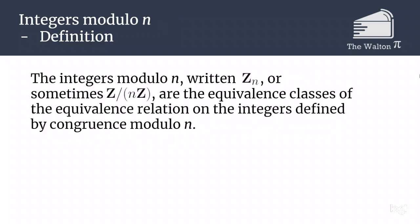Now that we've established what congruence mod n means, let's talk about the integers modulo n, written Z_n or sometimes Z mod nZ, depending on which branch of mathematics you're talking about it in. The integers mod n are the equivalence classes of the equivalence relation on the integers defined by congruence modulo n.